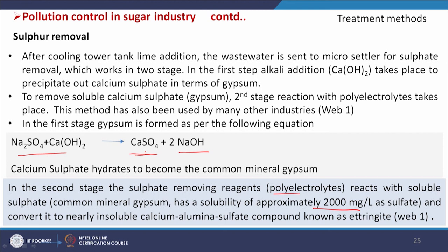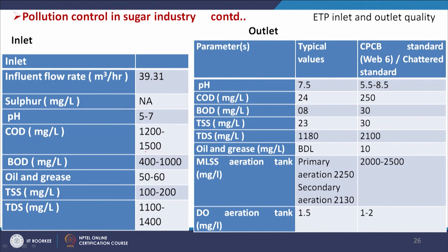The ETP inlet and outlet quality slide shows that after treatment, the effluent meets CPCB guidelines — parameters including COD, BOD, oil and grease, TSS, and TDS must be at or below specified values. Sulfate is marked as not applicable at the ETP inlet because it has already been removed from the cooling tower stream before entry.